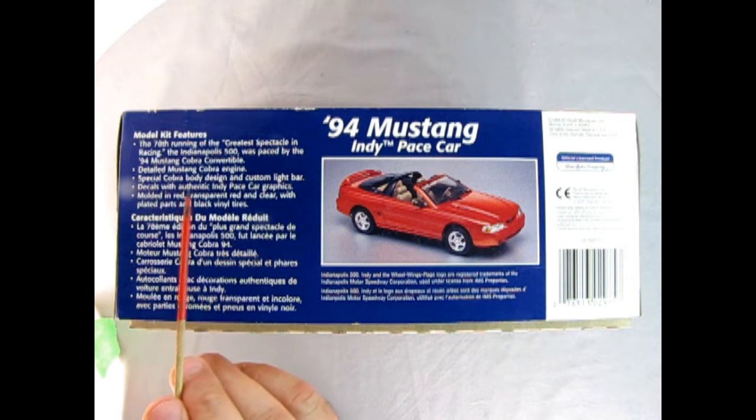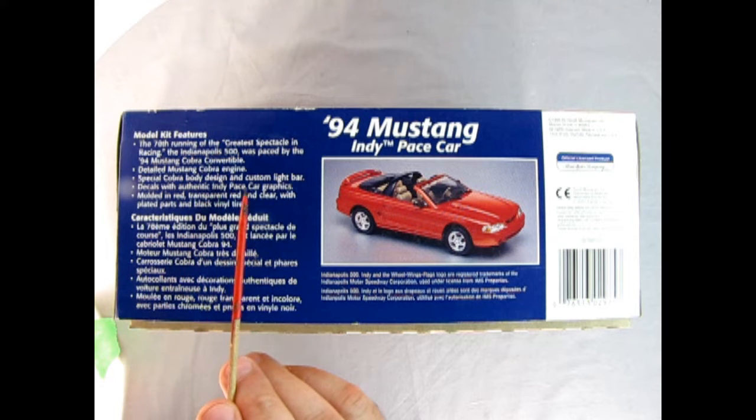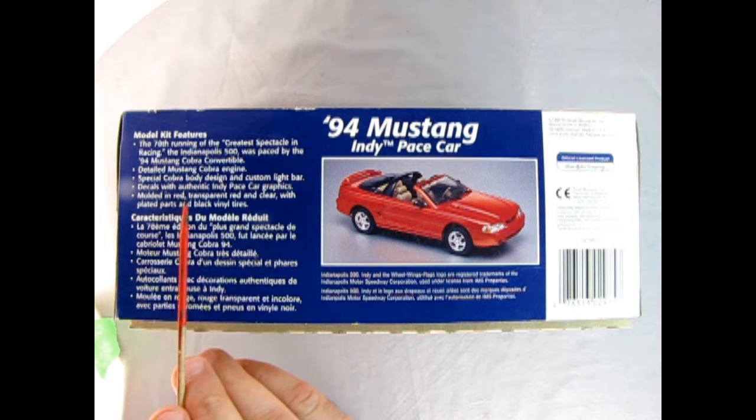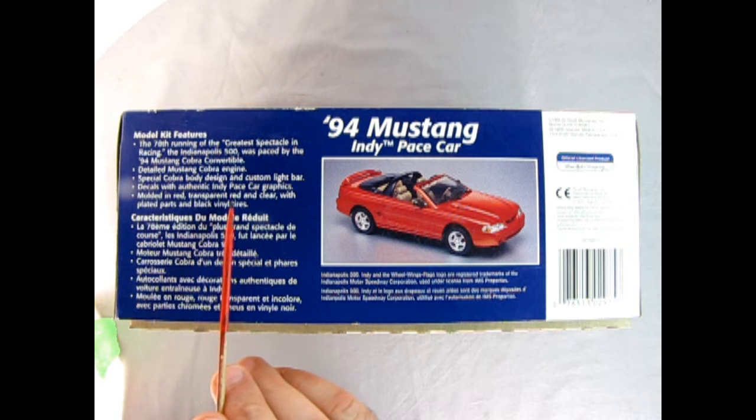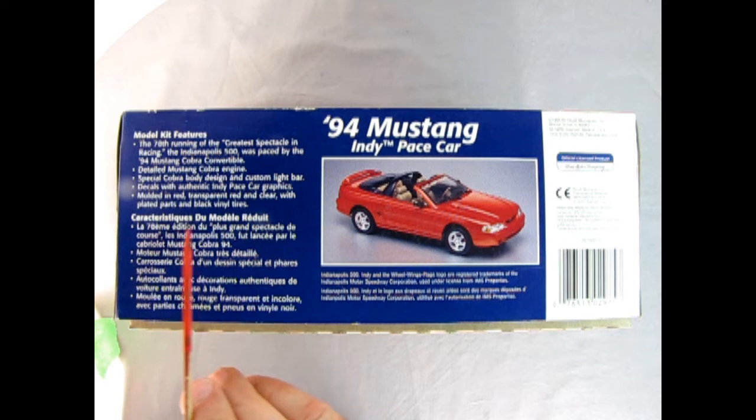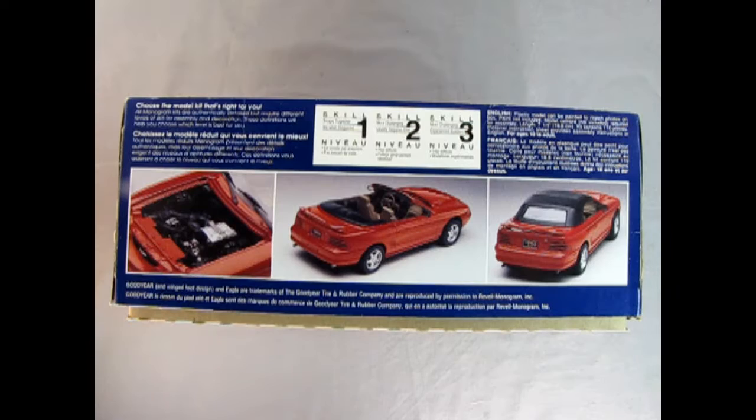Detailed Mustang Cobra engine, special Cobra body design and custom light bar, decals with authentic Indy Pace Car graphics, molded in red, transparent red and clear, with plated parts and black vinyl tires. And if we look on this side of the box we get a wonderful photograph of the engine, the rear three-quarters of the car, and of the back with the convertible top put up.